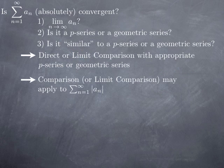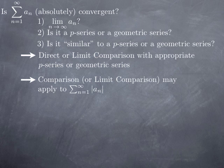Keep in mind that direct or limit comparison are for series with positive terms, or at least eventually non-negative terms. It might be that comparison applies to the series of the absolute values of a_n, and if you can conclude that the series of absolute values of a_n is convergent, then the series is absolutely convergent, and in particular convergent. So sometimes this is a way to apply criteria that only work for positive-term series even when you don't have positive terms.